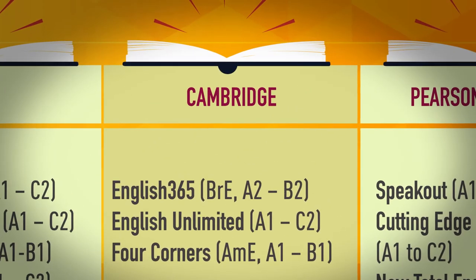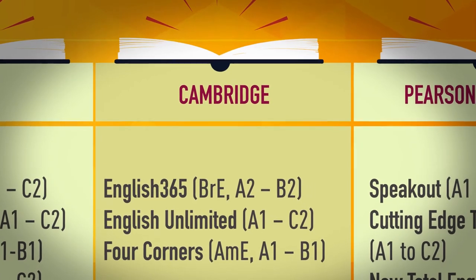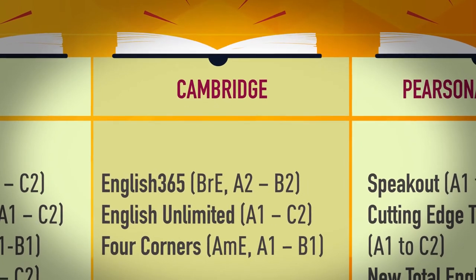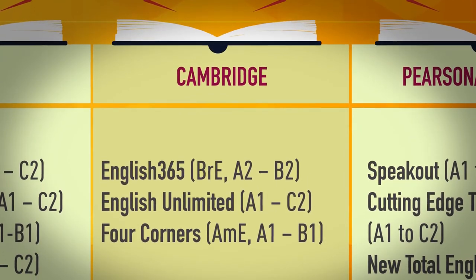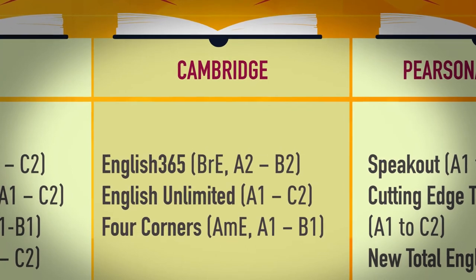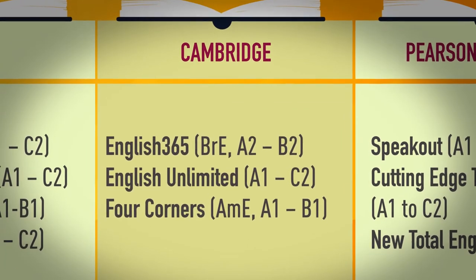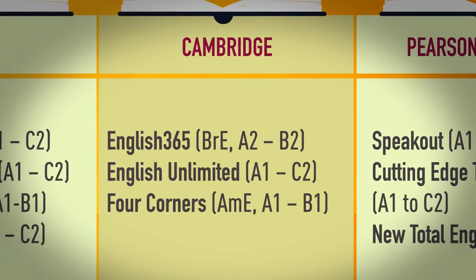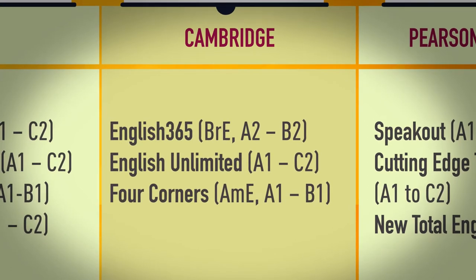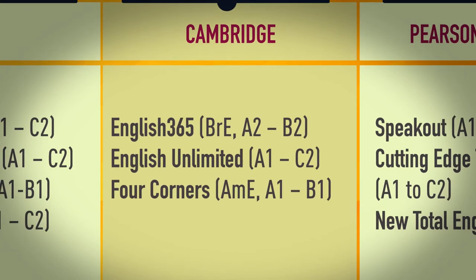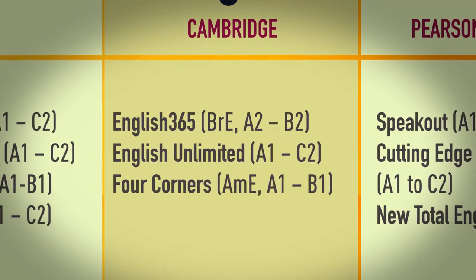Cambridge English: 365 British English A2 to B2, English Unlimited A1 to C2, Four Corners American English A1 to B1.